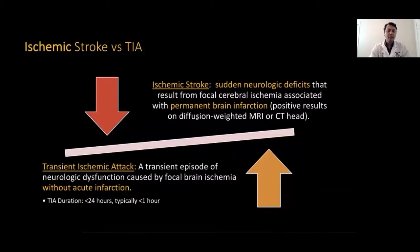What do we mean by ischemic stroke versus TIA? An ischemic stroke is defined as a sudden neurological deficit, which can be transient for a few hours or permanent, resulting from focal brain ischemia. It is associated with permanent brain infarction, which can be seen either on CT scan or on MRI. TIA, on the other hand, as the name suggests, is a transient but similar process caused by focal brain ischemia. There is no associated infarction on CT scan or MRI in patients with TIA. The typical duration of TIA is usually less than one hour, but an episode can last up to 24 hours.